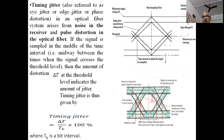Timing jitter, also referred to as eye jitter, horizontal jitter, or phase distortion, arises in an optical fiber system from noise in the receiver and pulse distortion in the optical fiber — pulse distortion means inter-symbol interference. If the signal is sampled in the middle of the time interval, midway between the times when the signal crosses the threshold level, then the amount of distortion delta t at the threshold level indicates the amount of jitter.